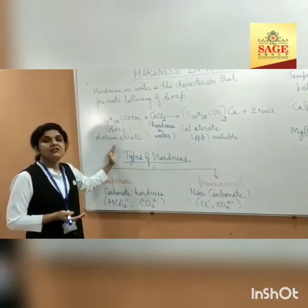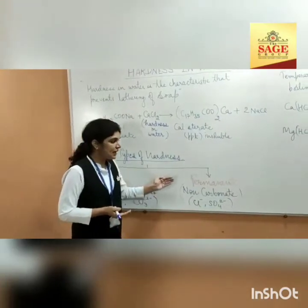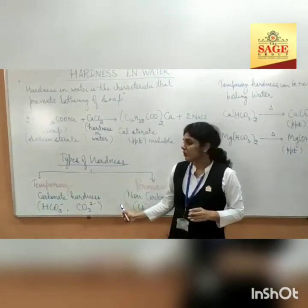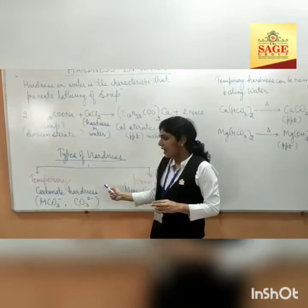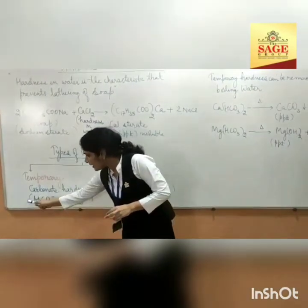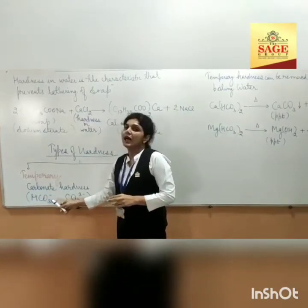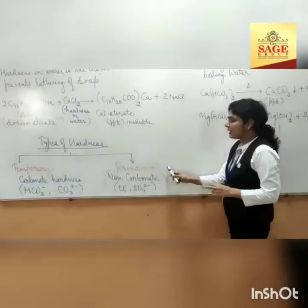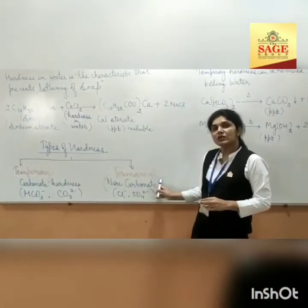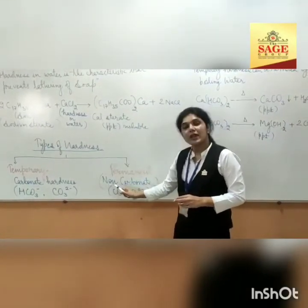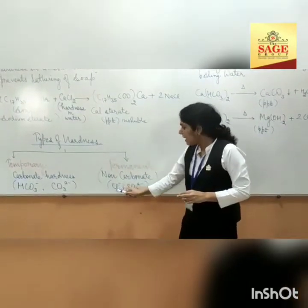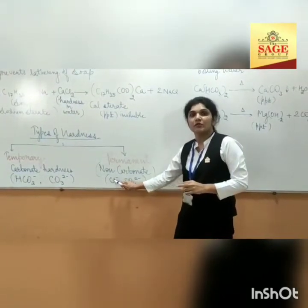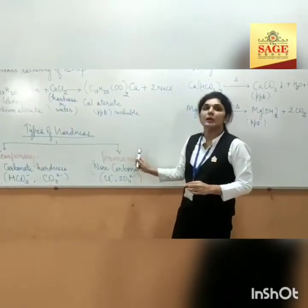Hardness is classified into two types: temporary hardness and permanent hardness. Temporary hardness is also known as carbonate hardness, and it is due to the presence of calcium bicarbonate, magnesium bicarbonate, and iron carbonate. Permanent hardness is also known as non-carbonate hardness. The salts responsible for permanent hardness are calcium chloride, magnesium chloride, calcium sulfate, magnesium sulfate, sulfates of iron, sulfates of aluminium, sulfates of fluoride, and aluminium chloride.